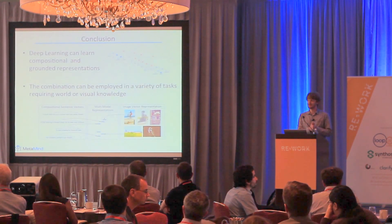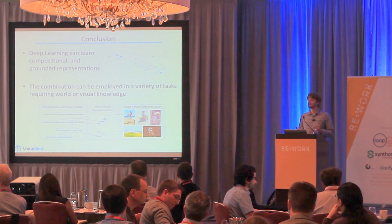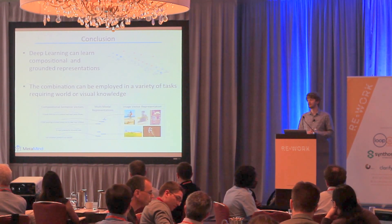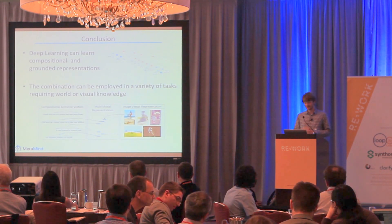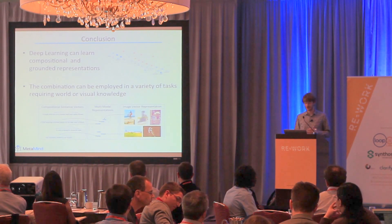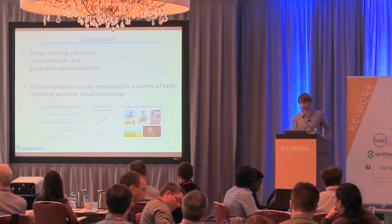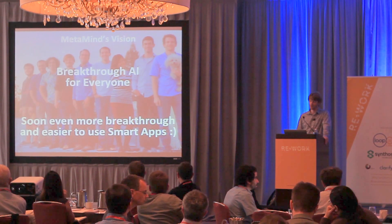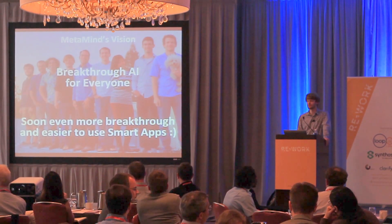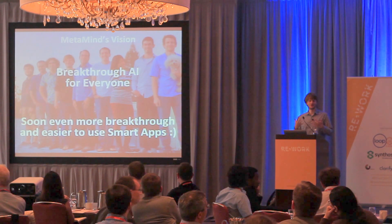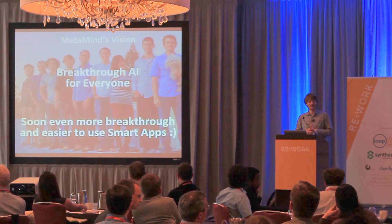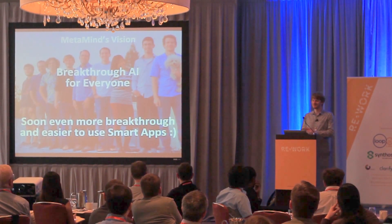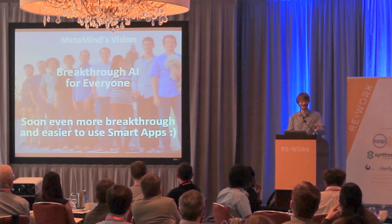To conclude, deep learning is a very powerful technology that allows you to learn both compositional and grounded representations to solve real-world tasks. This combination can be employed in a variety of tasks that require both world knowledge and visual knowledge. This is what drives our work — MetaMind's vision of breakthrough AI for everyone. In two weeks there will be the NIPS paper deadline, and in about three weeks we'll put out some even more breakthrough results in this area. Thank you.